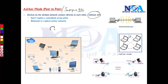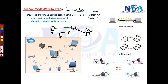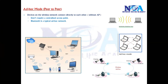Ad-hoc mode is applicable where you have two users, say laptops, needing to exchange documents. For example, a laptop connecting to a printer without a dedicated access point, or sharing files urgently with a friend when moving to a different place. Bluetooth is a typical example of an ad-hoc network, connecting personal devices — it is also one kind of ad-hoc mode.